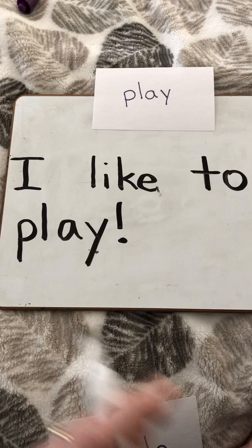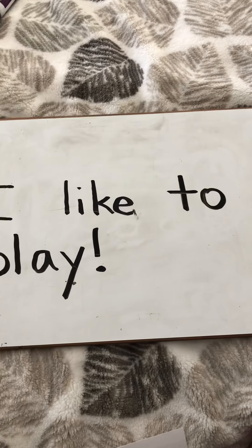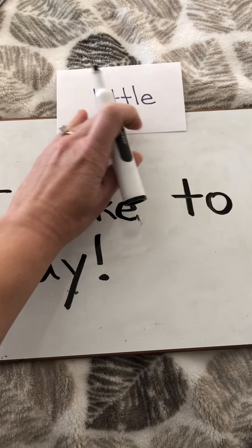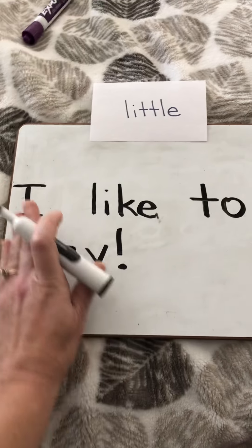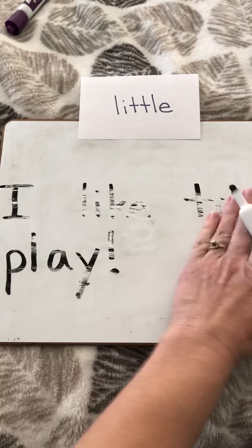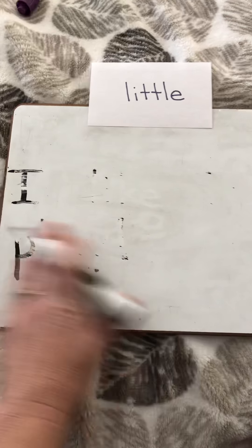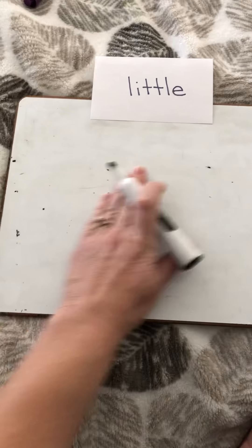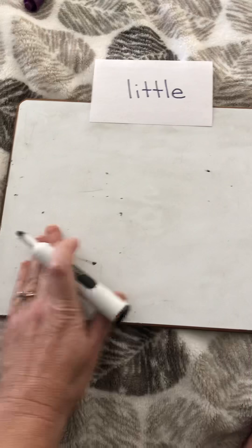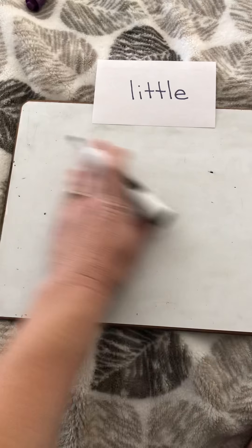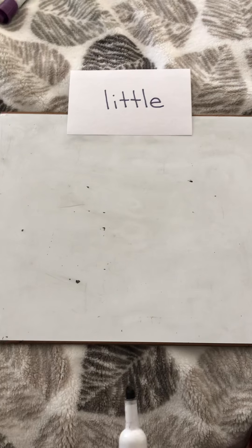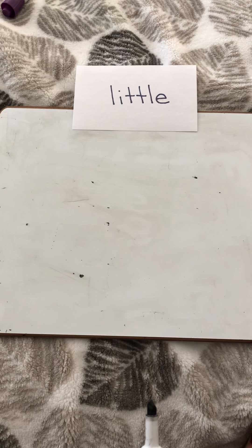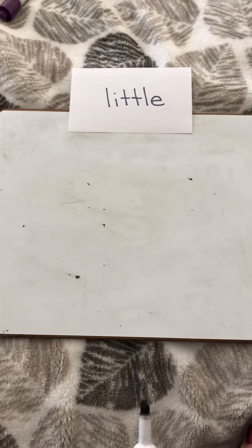Now let's do a sentence using our other word, little. I'll erase this one. Some of you saw on my other video that I have a cat. My cat is little. So I'm going to say my cat is little — that's going to be my sentence.